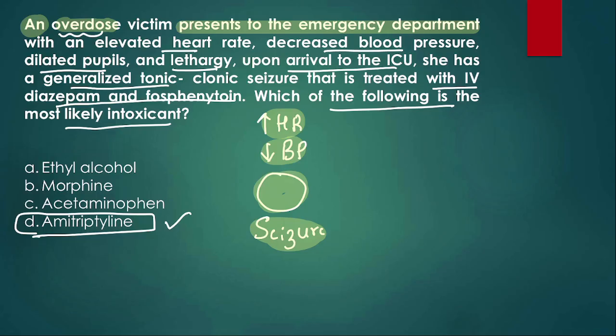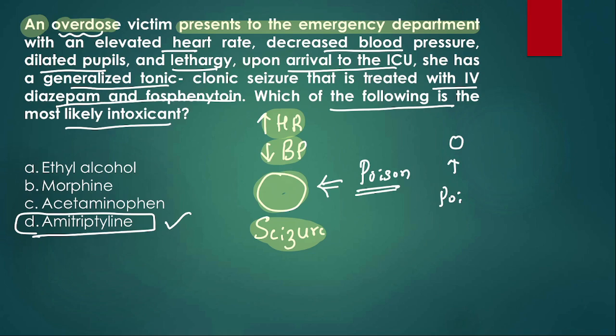It was an extensive discussion but very useful for understanding poisoning cases. Tell me in the comments: which poisonings cause dilated pupils (mydriasis), and which poisonings cause constricted pupils (miosis)? Please put your answers in the comment section.